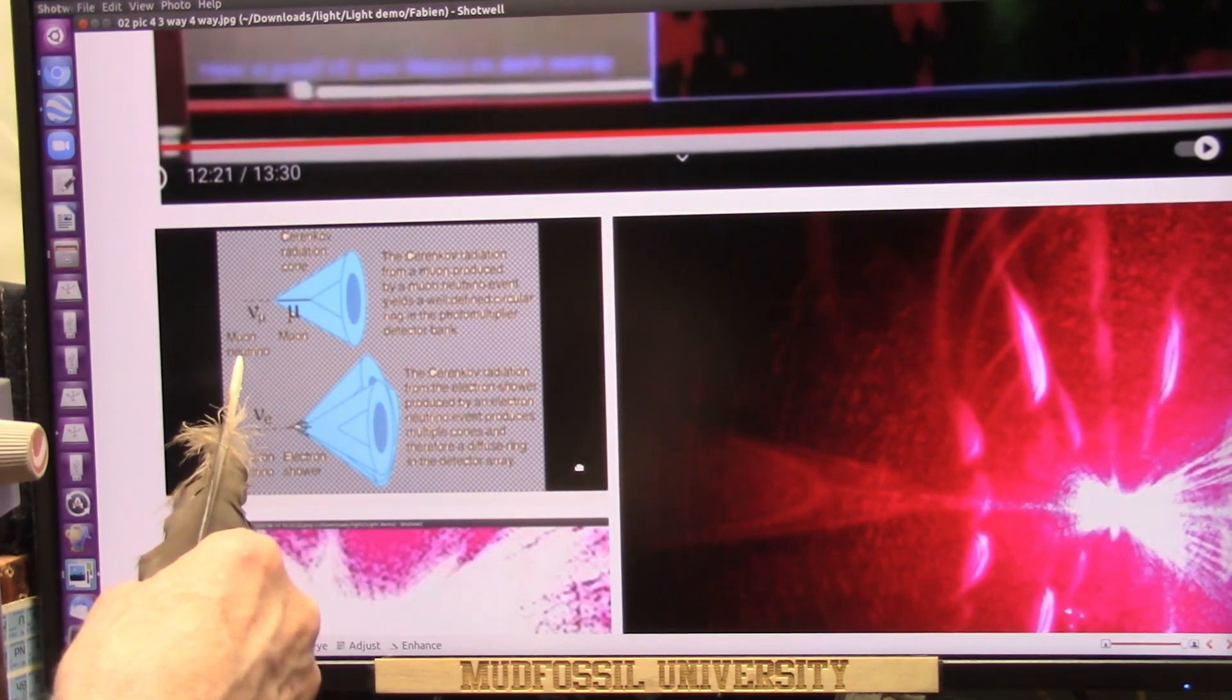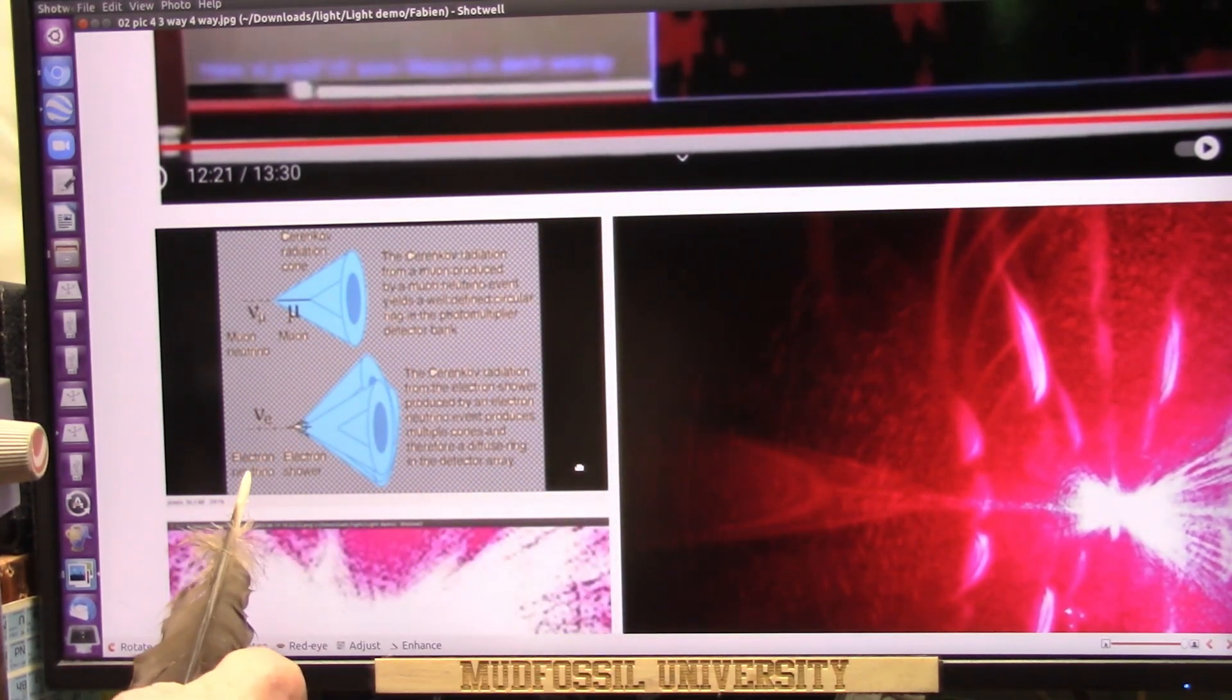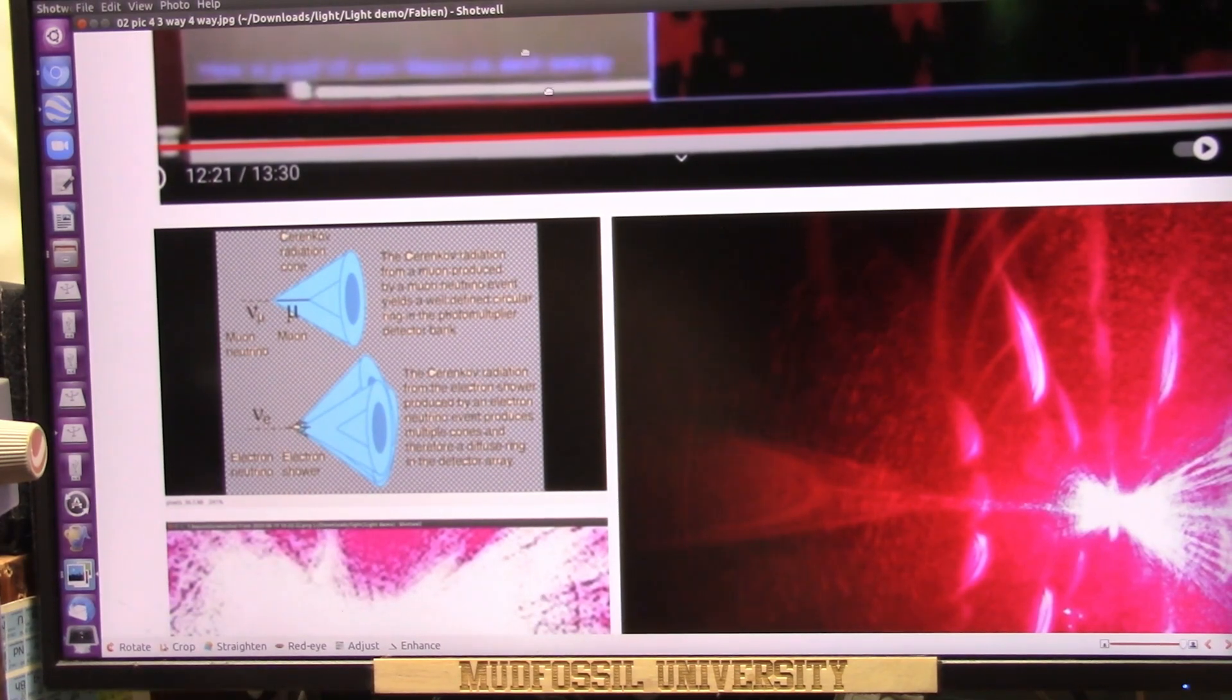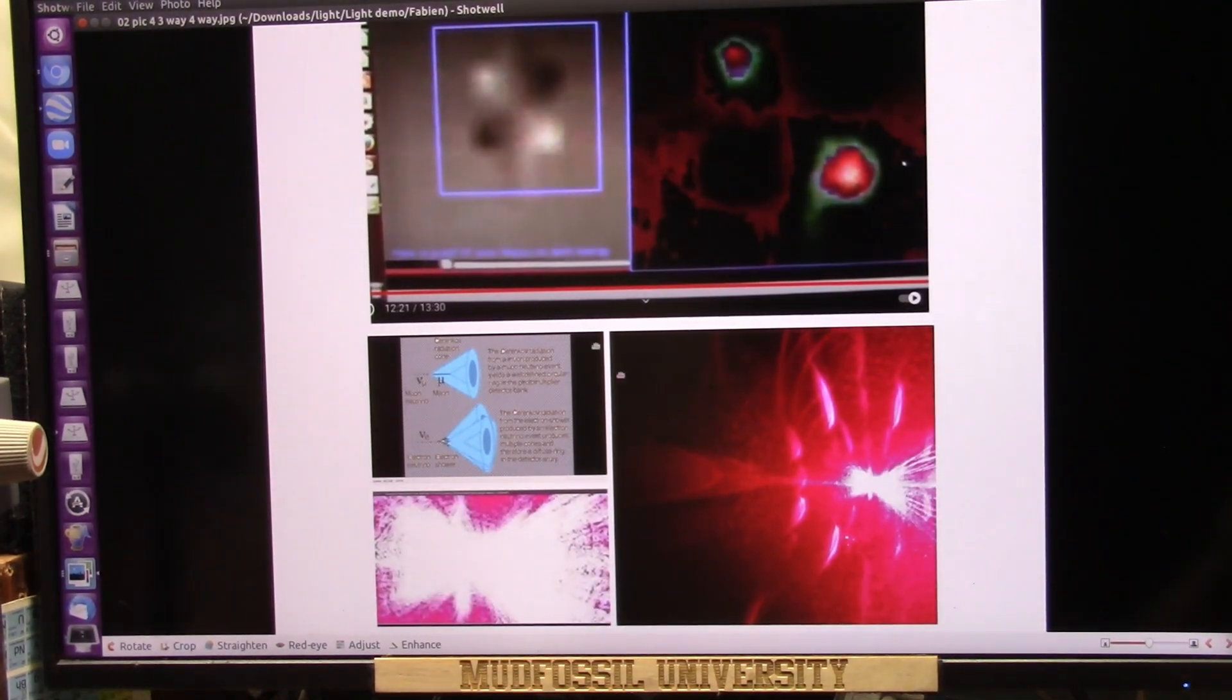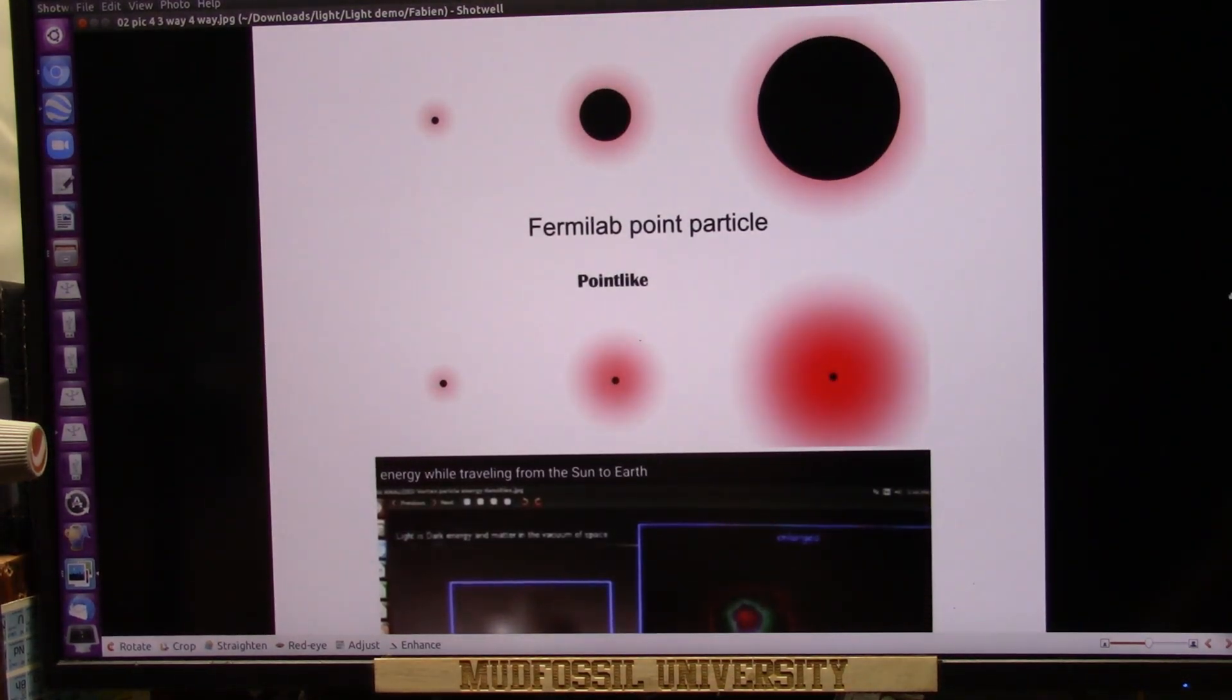So the muon neutrino becomes a regular muon, sterile muon. The electron neutrino turns into an electron shower. No question we did that. Absolutely none. And this is the same particle they found at Fermilab and CERN, all of them. And we can do this in copious quantities.